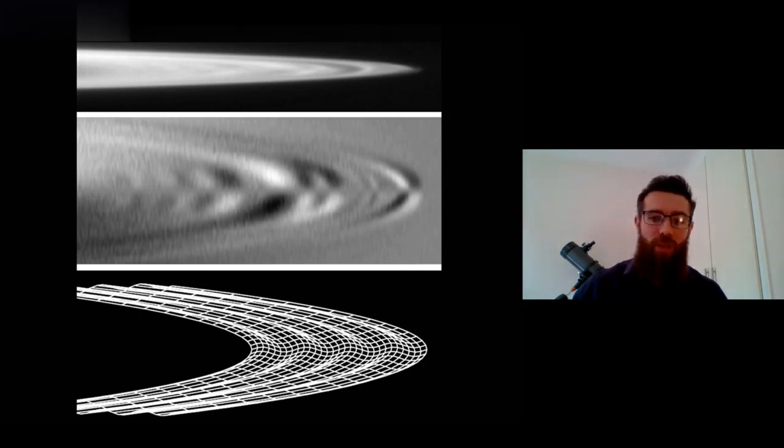So at the bottom you've got a simulation there and then the top two are images, and they're not that clear. Again, the ring system's not as bright as Saturn's, but there is a clear rippling effect there that was due to the comet.